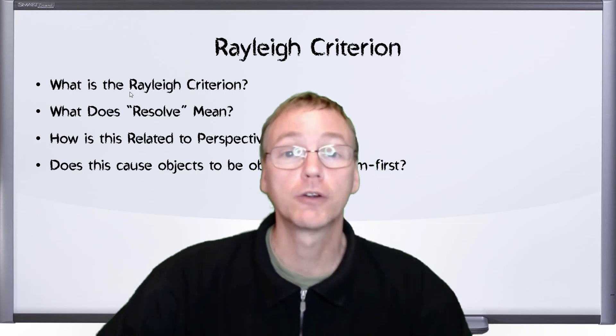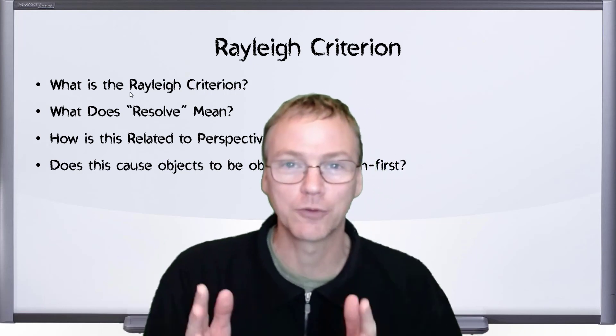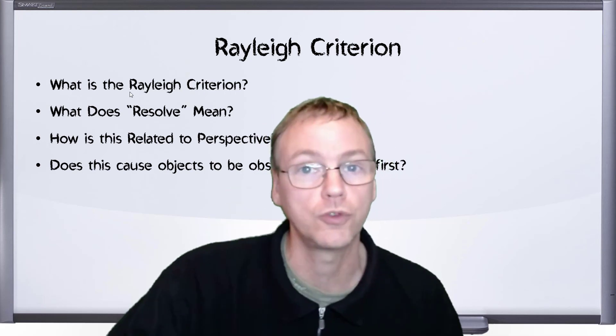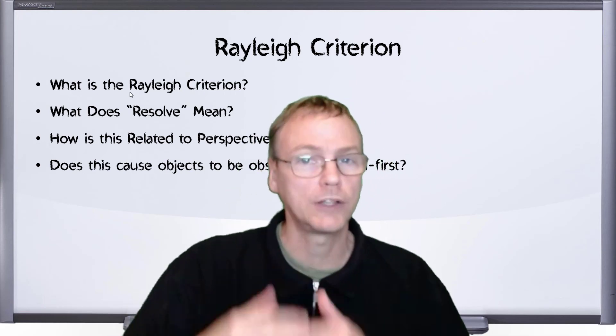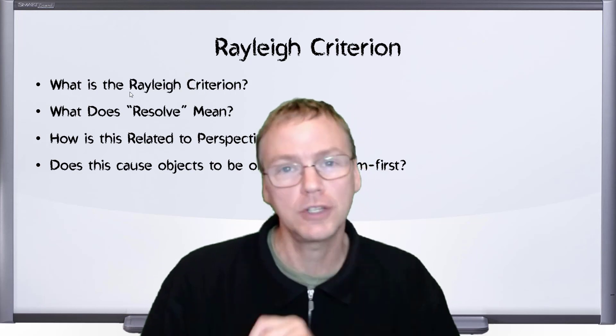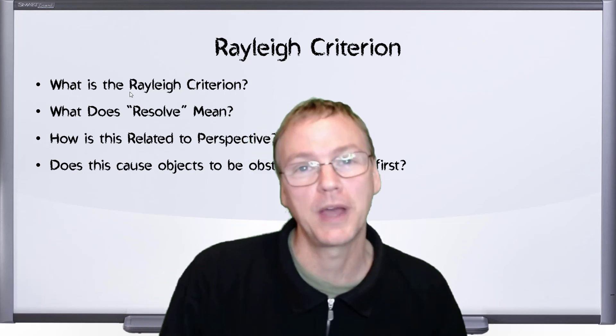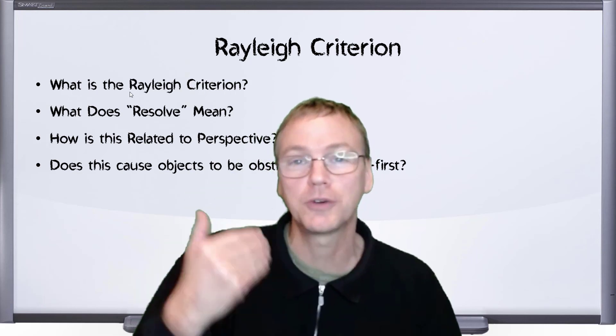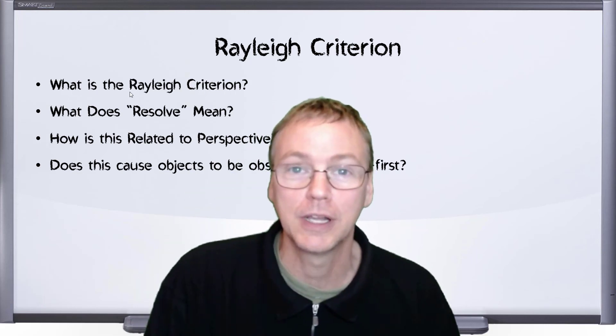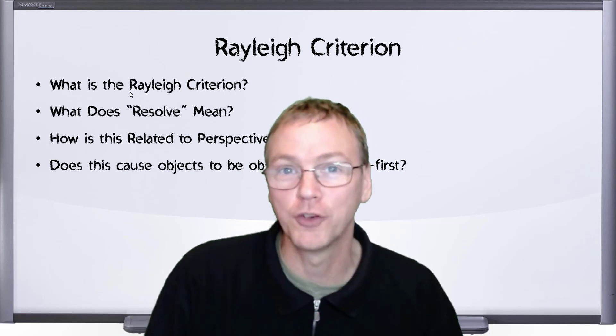In the second video, we learned what it looks like when you can't resolve an object because its angular size is too small. We learned that the resolution of the camera or the retina in your eye is usually the limiting factor. But if you have a very high resolution sensor in your camera, you can actually run into the Rayleigh Criterion based on the aperture of your lens.